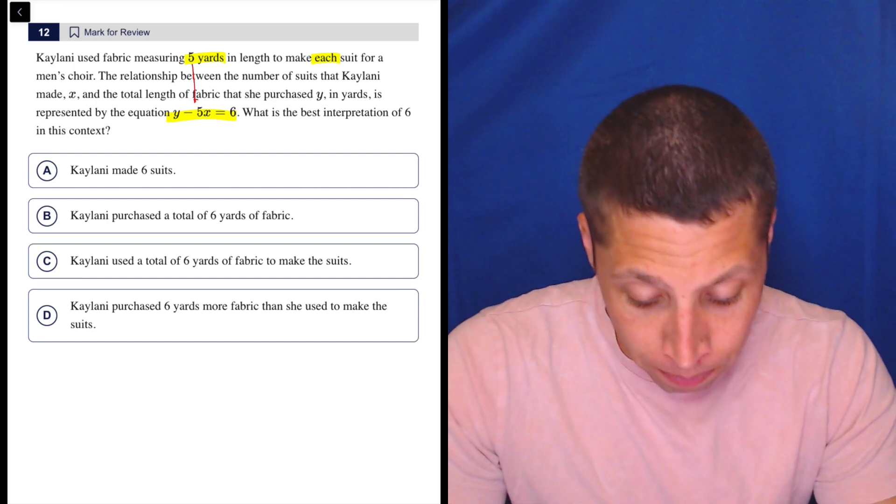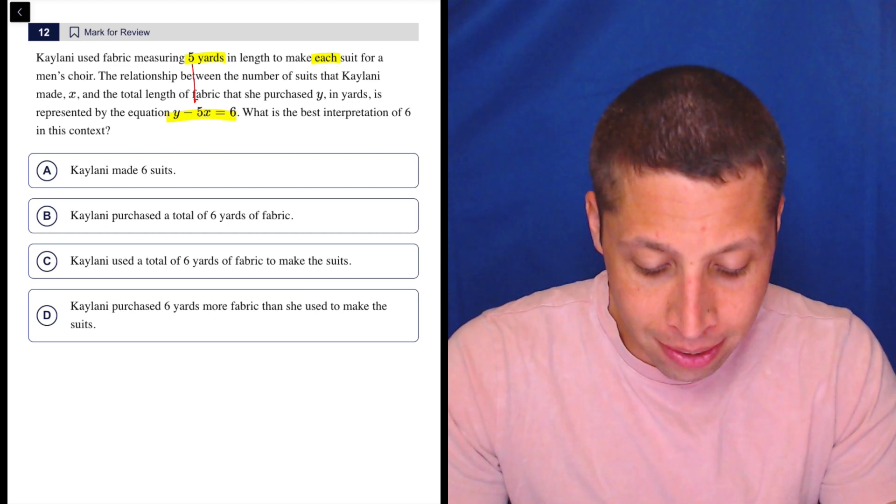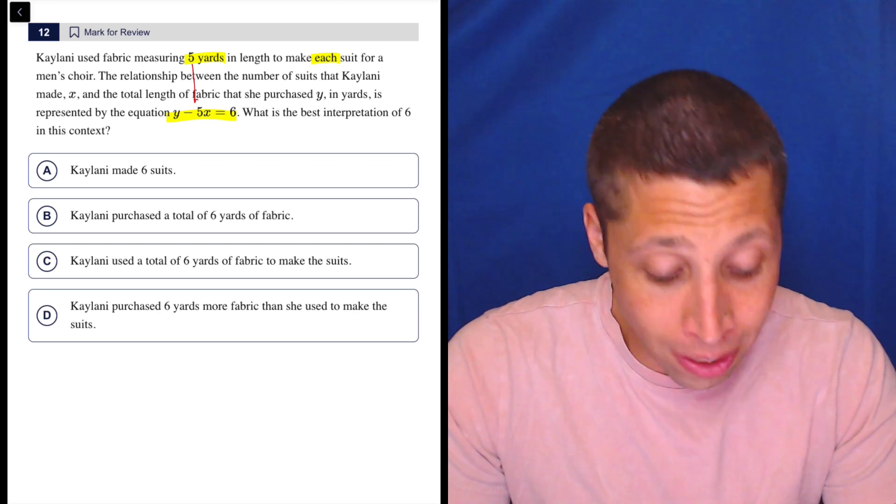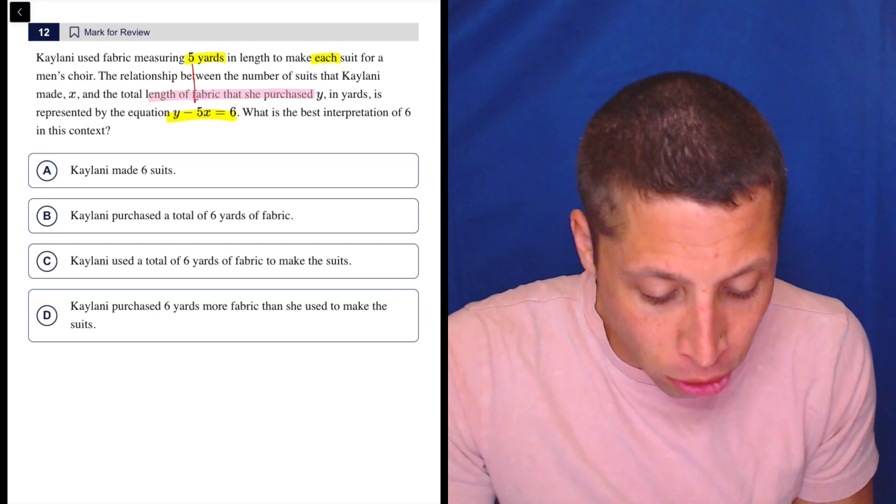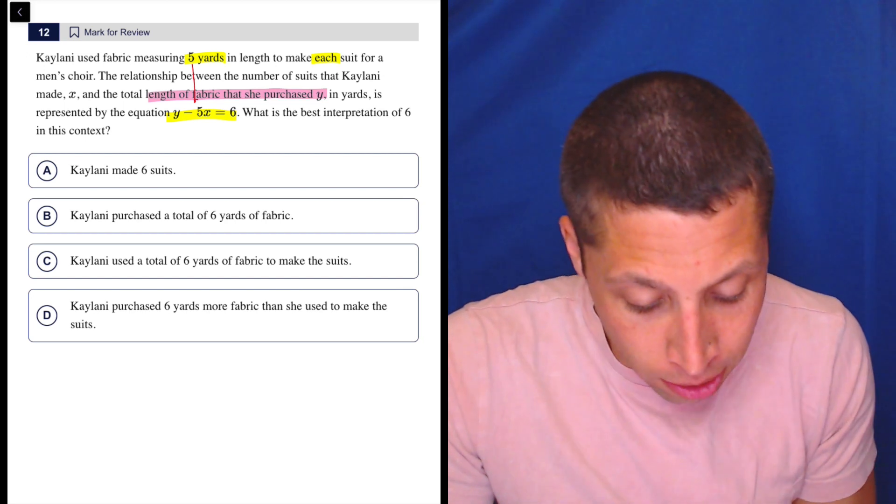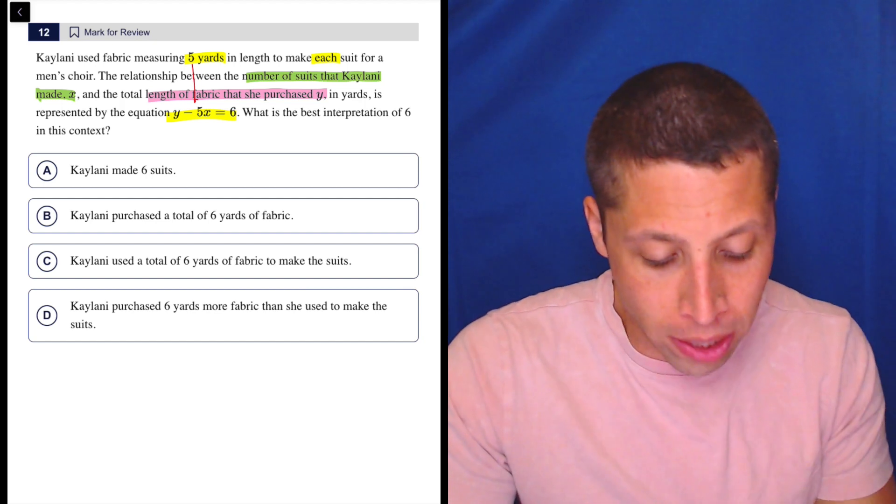The relationship between the number of suits that Kalani made, x, and the total length of fabric that she purchased, y. That's valuable information. So the length of fabric she purchased is y, the number of suits she made is x. That's all represented by this equation.